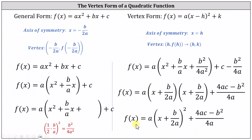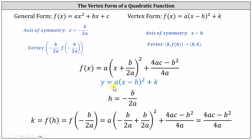Now that we have the quadratic function in vertex form, let's identify h and k. Comparing to f(x) = a(x − h)² + k, because in vertex form we have the square of (x minus h), notice h would have to be −b/2a, which we know from our previous work is the x-coordinate of the vertex. Now we just need to show that k = (4ac − b²)/4a equals f(−b/2a).